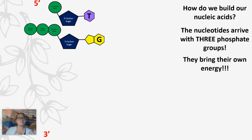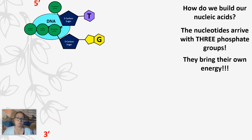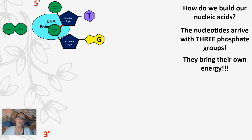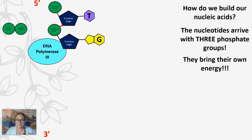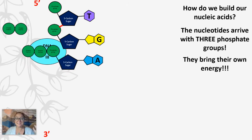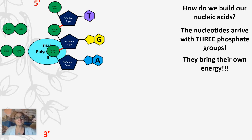It doesn't just happen magically — we need an enzyme. The enzyme we use is called DNA polymerase 3. When the two extra phosphate groups are broken off, that is an exergonic reaction. The energy released is used in an endergonic reaction to form that phosphodiester bond between the sugar and the phosphate group. DNA polymerase 3 takes the next nucleotide — here an adenine nucleotide — the two phosphate groups are broken off, and the phosphodiester bond is built.